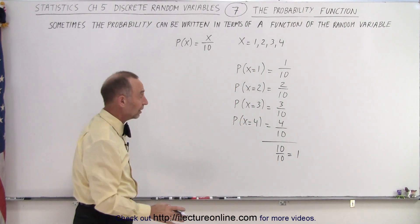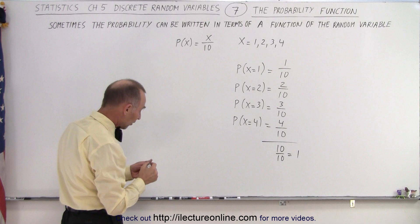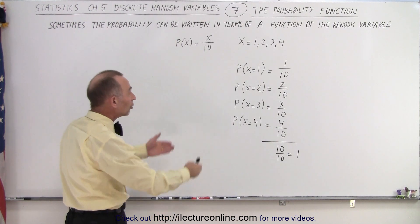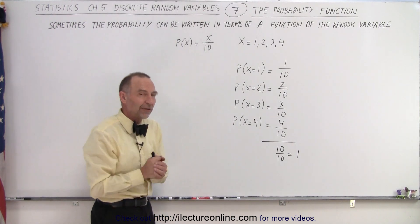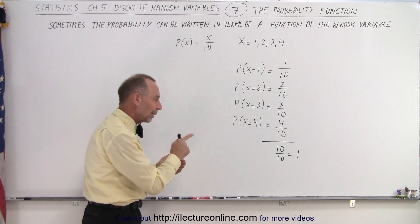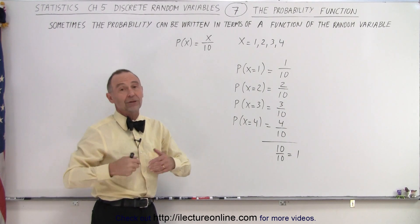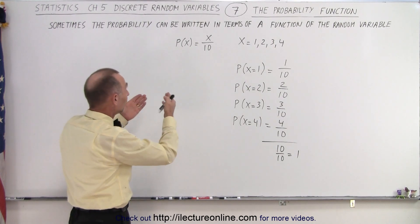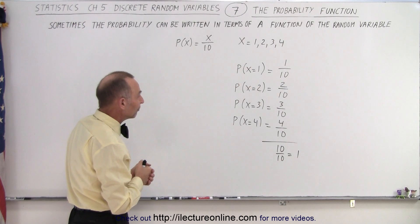And that's an indication that that's a proper function because when we add up all the probabilities of all the possible values that x can have, we end up with a 1. And that shows that this is a proper function of that random variable.